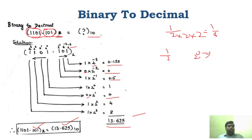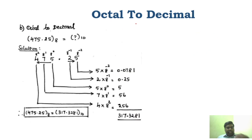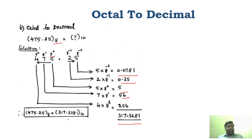The same way, you have to do octal to decimal conversion. Everything is the same — the only difference is you use the power of 8. So you write 8 to the power of 0, 8 to the power of 1, 8 to the power of 2, and similarly 8 to the power of minus 1, 8 to the power of minus 2. You multiply with the corresponding powers, and you will get values like 5, 56, and 256. If you add all these things, you get 317.3281. For this octal number, the equivalent decimal number is 317.3281.